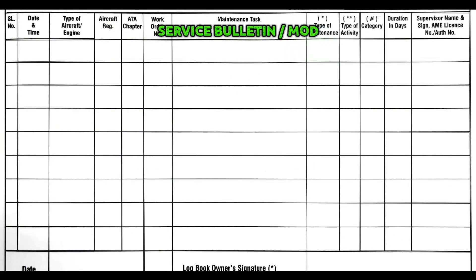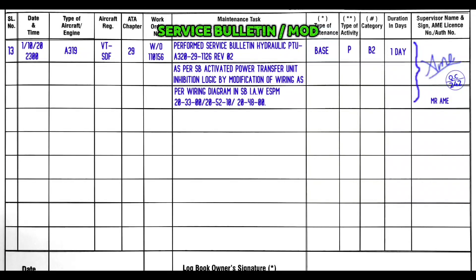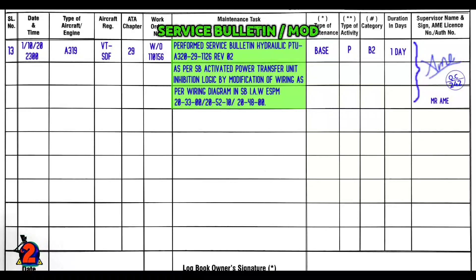Example for service bulletin or modification — these entries are rare, so try to write maximum detail. As seen in workshop entries, first write the service bulletin title and number: perform service bulletin of hydraulic PTU A320-29-1126 revision 02. Work done: as per service bulletin, activated power transfer unit inhibition logic by modification of wiring as per wiring diagram in service bulletin. Give the ESPM reference for how the wiring modification was carried out — all references are normally mentioned in the service bulletin. It was done in base, performed, B2, and the duration of the modification is one whole day.